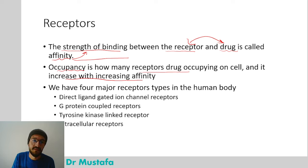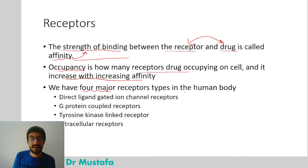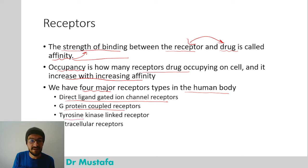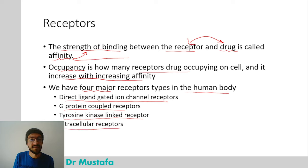We have four major receptor types in the human body: direct ligand-gated ion channel receptors, G protein-coupled receptors, tyrosine kinase-linked receptors, and intracellular receptors. The G protein-coupled receptor is the most common.